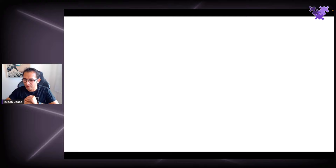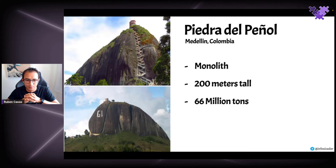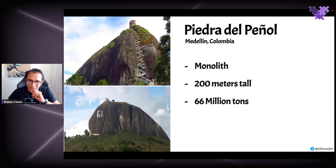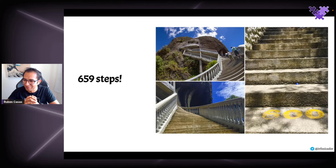Before we start, I wanted to show you something really cool. This is something I found — it's called Piedra de Peñol in Medellin, Colombia. It's a huge monolith, 200 meters tall and 66 million tons. I've been up to the top of this monolith, and to get there you have to climb 659 steps. There is no lift. There is no other way to get there.